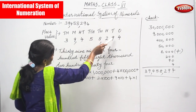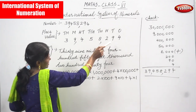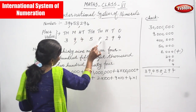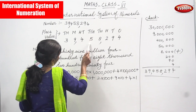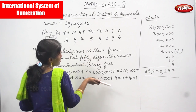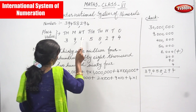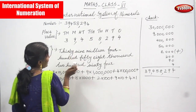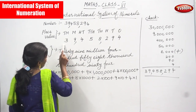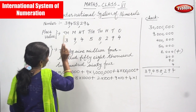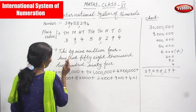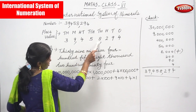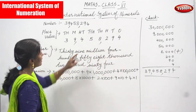In the ones place we have 4, tens place 9 (nine into ten = ninety), hundreds place 2 (two into hundred = two hundred), thousands place 8 (eight into thousand = eight thousand), ten thousands place 5 (five into ten thousand = fifty thousand), hundred thousands place 4 (four into hundred thousand = four hundred thousand), millions place 9 (nine into one million = nine million), and ten millions place 3 (three into ten million = thirty million). So the number is 39,458,294.